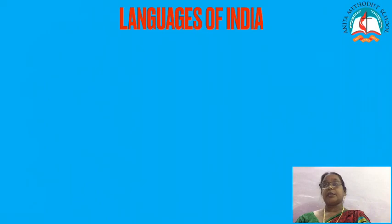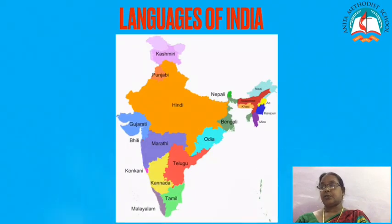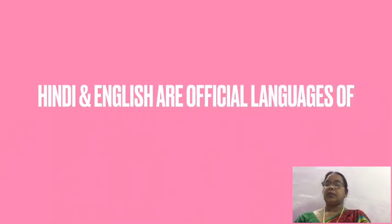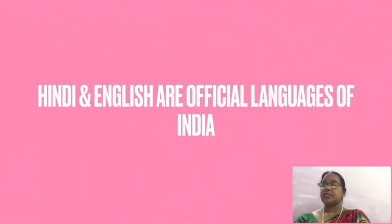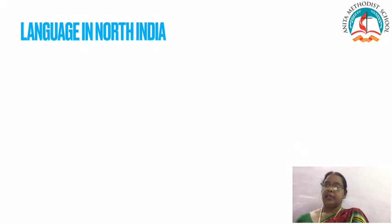Now we are going into the languages of India. India has many languages and cultures. Each state has its own language, though Hindi and English are official languages — Hindi and English are official languages, not the national language. There are 22 major languages spoken in India.